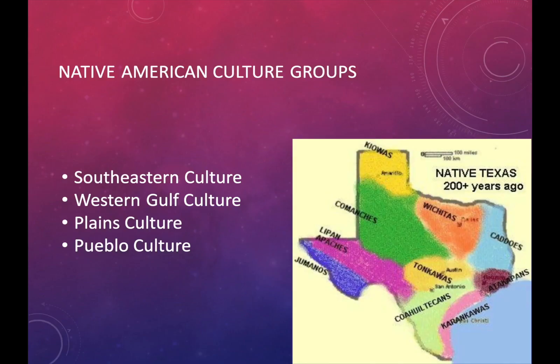Now we need to look at the different cultures and the different tribal groups. There are four main cultures in Texas: the Southeastern culture, the Western Gulf culture, the Plains culture, and the Pueblo culture.